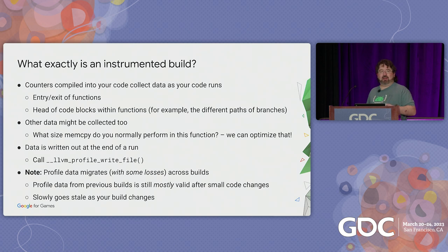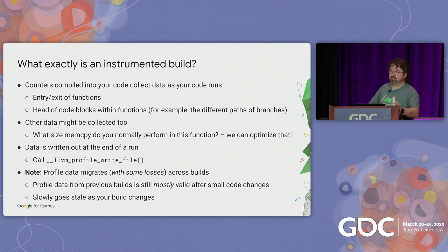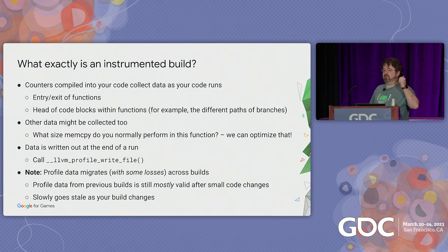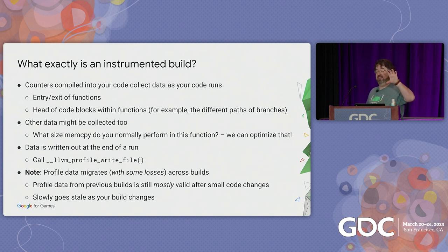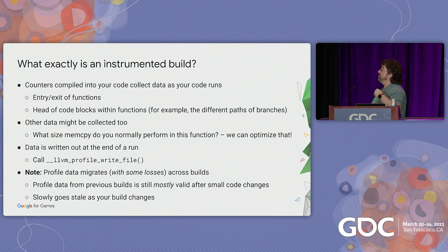An instrumented build takes your code and compiles counters into it to collect data as it runs. These counters get added to the entry and exit of your functions, and at the entry point of any different code block within a function. For example, if you had an if-else branch, a counter would be added at the top of the if block — ticking up when your code enters it — and another counter at the beginning of the else branch. Adding all of this together, you can figure out how many times your code went down different paths of execution, so we can figure out which ones are most important.